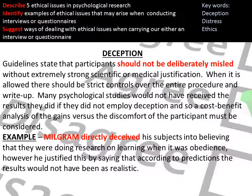The next issue is deception. Participants should never be deliberately misled, including about what the study is about. Milgram directly deceived his participants by telling them they were doing research to do with punishment and learning, when actually the study was about obedience. This is a clear example of deception where participants were lied to about the aims of the experiment.